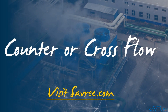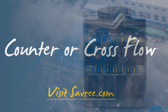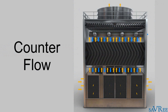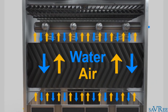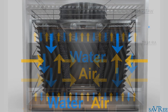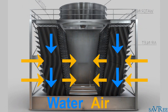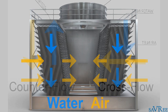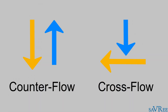Counter or cross flow. Counter flow cooling towers force the cooling liquid in the opposite direction to the ambient air. For example, water will flow downwards due to gravity, whilst a fan forces air to flow upwards. The two mediums are thus flowing in opposite directions, 180 degrees apart. Cross flow cooling towers force one medium to flow perpendicularly to another — that is to say, they flow 90 degrees apart relative to each other. For example, air may flow perpendicularly across tubes containing cooling water.